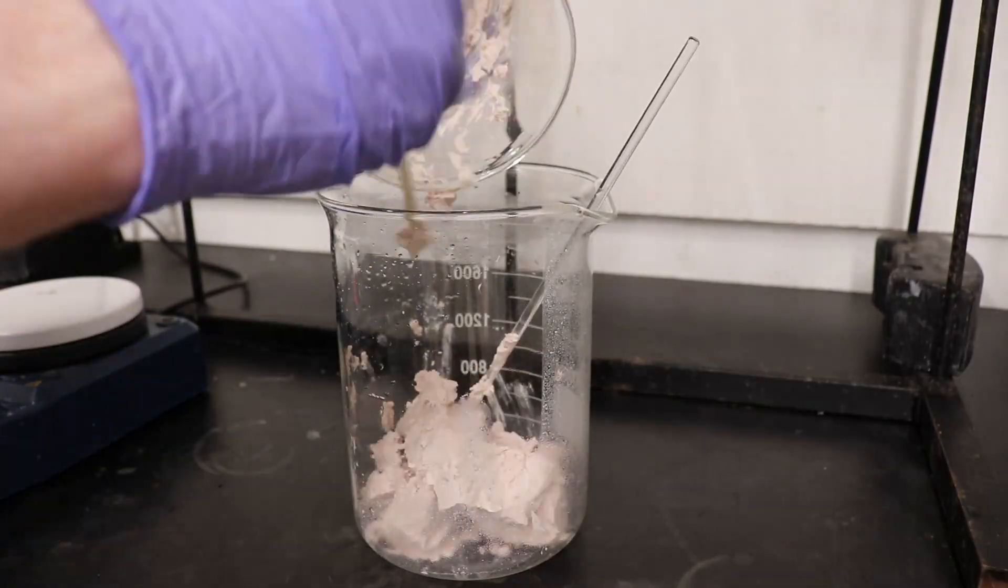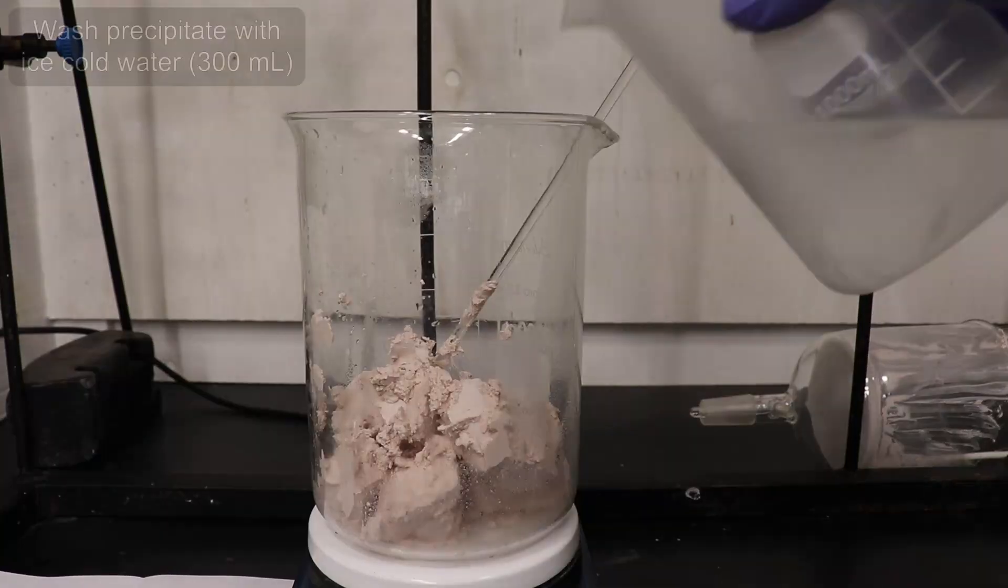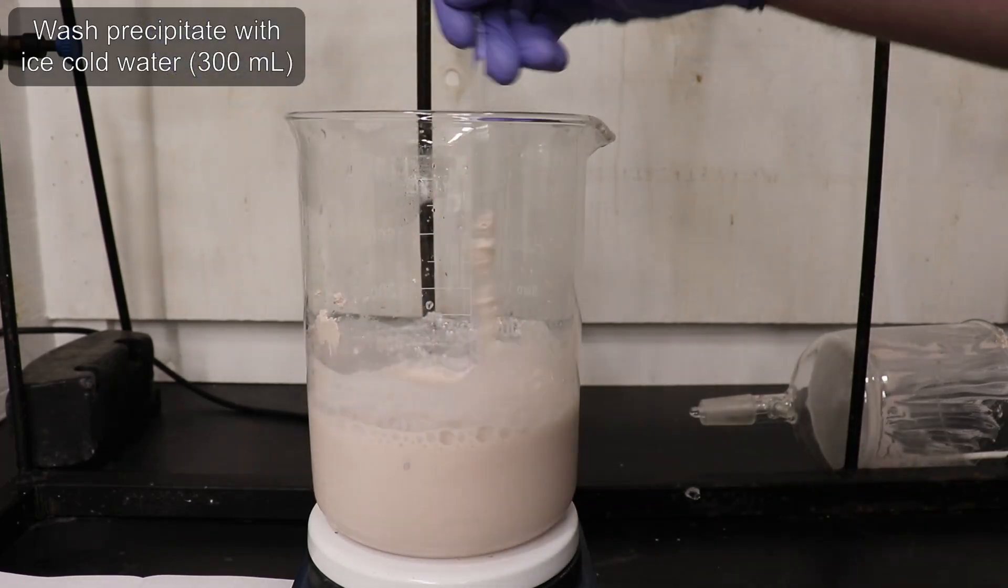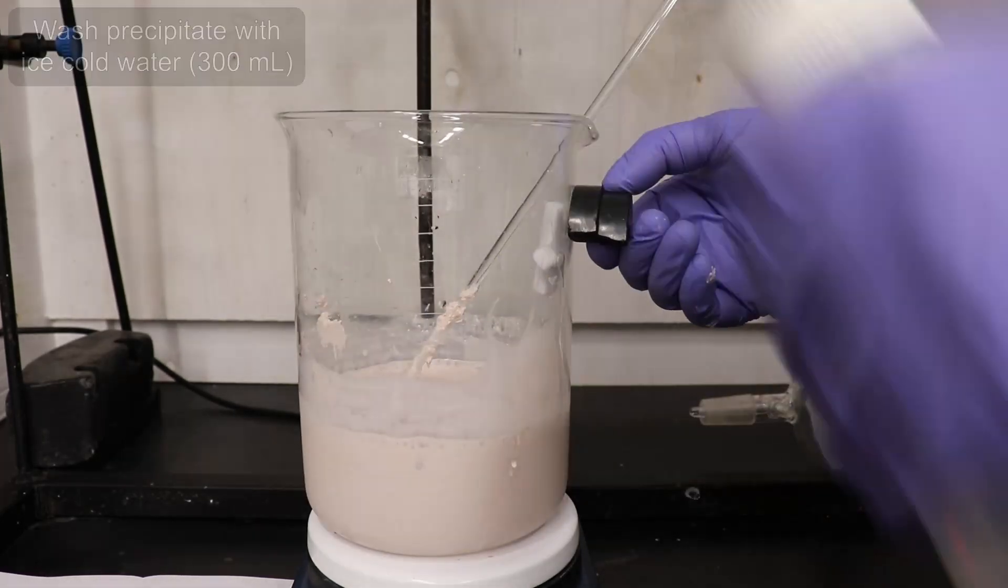The precipitate was filtered off using a large glass fritted funnel. I transferred the filtered pasty material back into a beaker and washed it with 300 mL of ice cold water before filtering again.